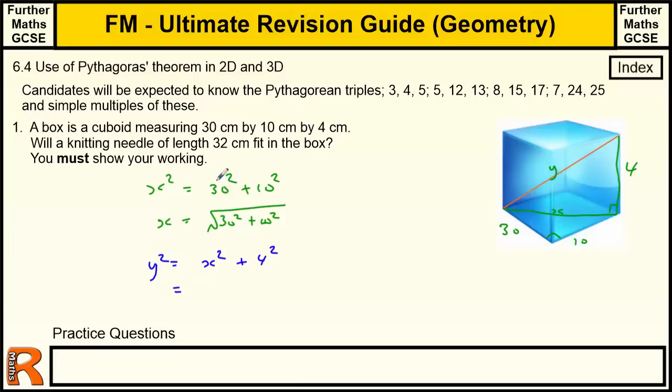So x squared is just, it's actually that, wasn't it? 30 squared plus 10 squared. And I'm going to add on the 4 squared. And I just want to do the square root of that. So this is the sort of shortcut, if you remember this. Missed the squares.